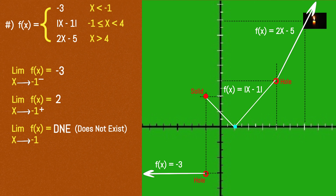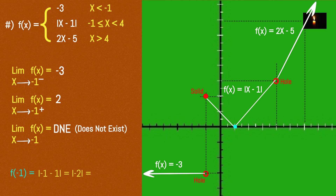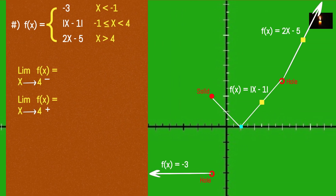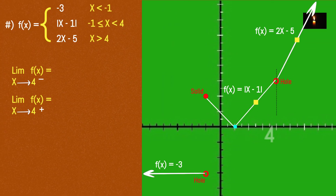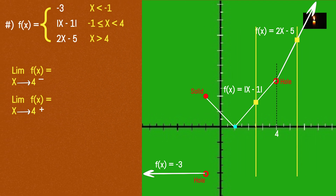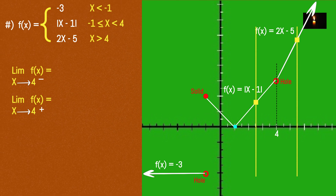Since f(-1) uses the absolute value piece with solid dot (equal sign included), f(-1) = 2. The domain at x = -1 has a limit that does not exist. Now the next example: limit x approaches 4 from the left.